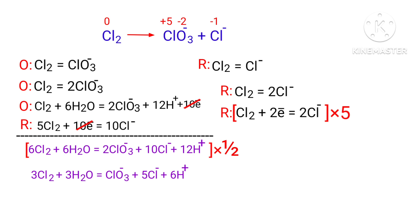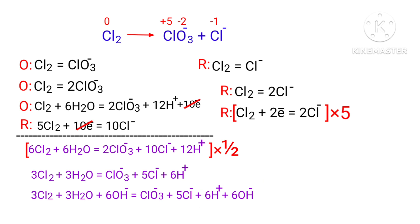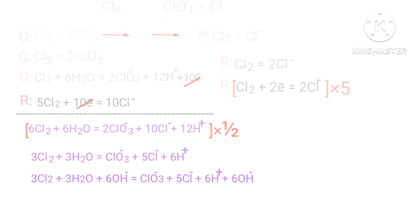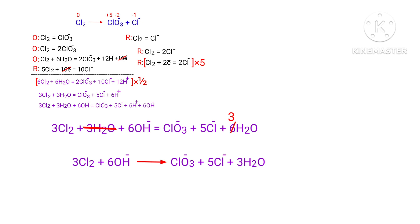For a reaction in a basic medium, add one OH⁻ for every H⁺ present in the equation. The OH⁻ must be added to both sides to keep charge and atoms balanced. Combine OH⁻ and H⁺ that are present on the same side to form water. Now you can cancel the same terms. The equation is now balanced in a basic medium.